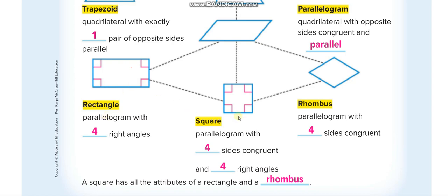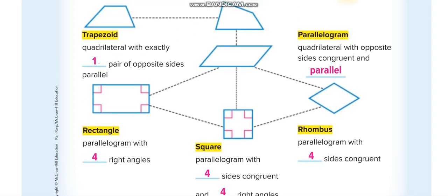A square is also a parallelogram — it has all the characteristics of a parallelogram: opposite sides are parallel and of the same length. But it has two more characteristics: four right angles like a rectangle, and all four sides are equal. So when all four sides are equal and all angles are right angles, that is a square. When opposite sides are equal and parallel but no right angles, that is a parallelogram. When only one pair of opposite sides is parallel, that is a trapezoid.